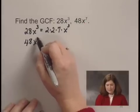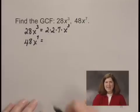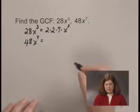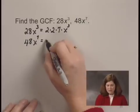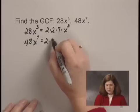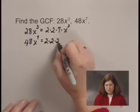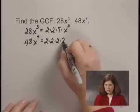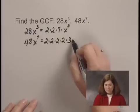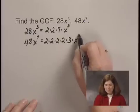48x to the 7th is 8 times 6, or 16 times 3. That's 4 factors of 2: 2 times 2 times 2 times 2 times 3. And then that's multiplied by x to the 7th.